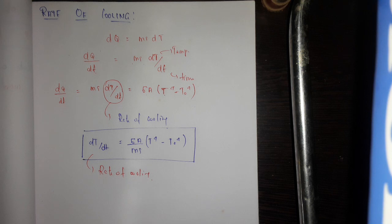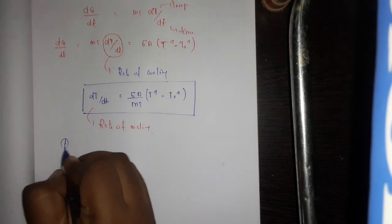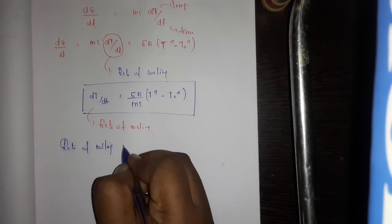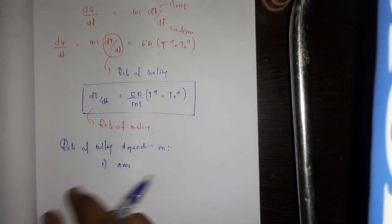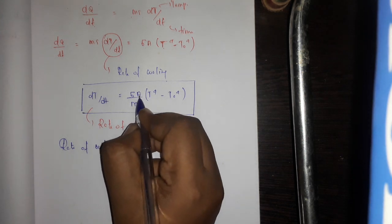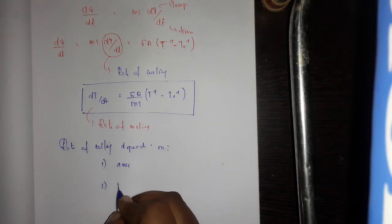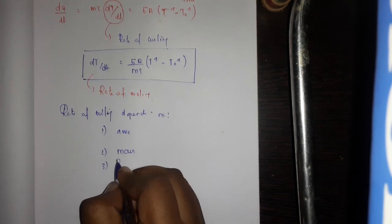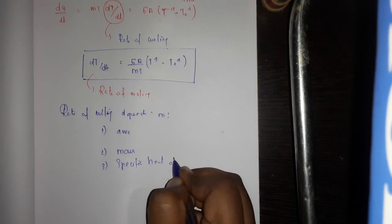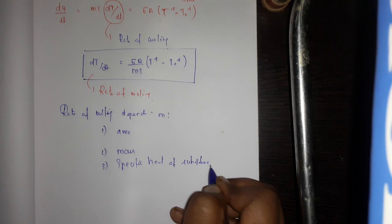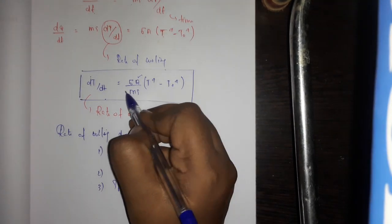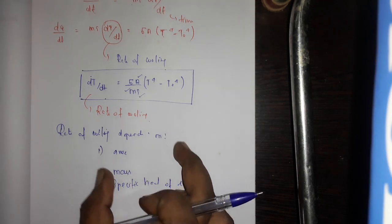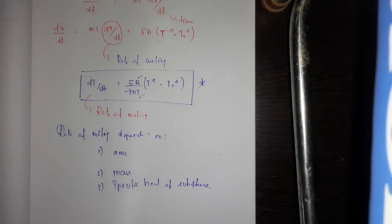The rate of cooling depends on the area, the mass, and the specific heat of the substance. The rate of heat is determined by the surface. So dT by dt — the rate of cooling — depends on the area, the mass, and the specific heat of the substance. This is the important formula for the rate of cooling.